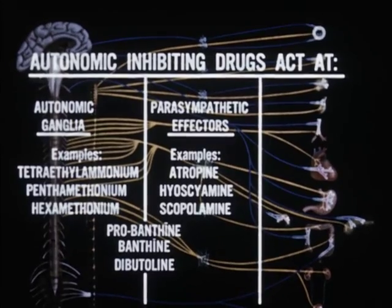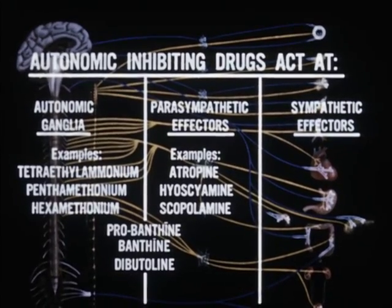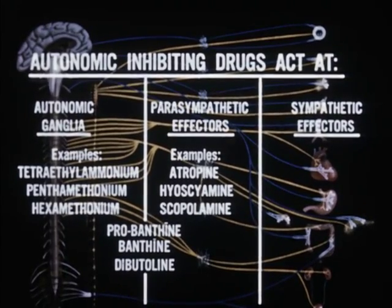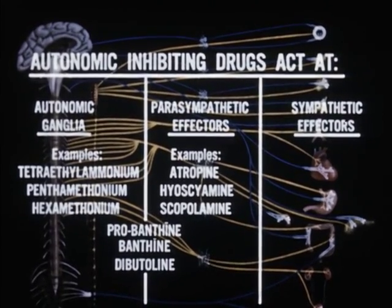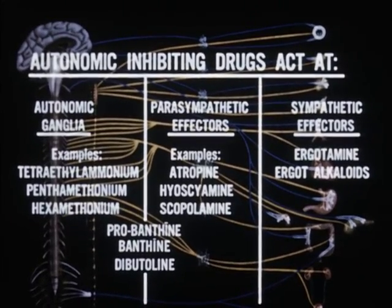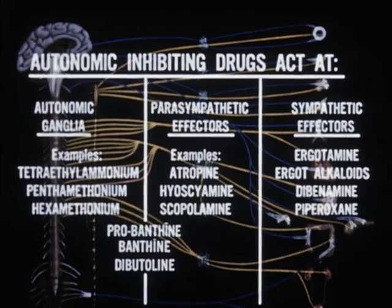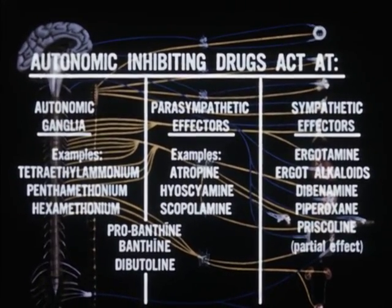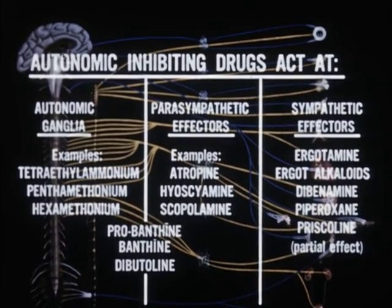Drugs which block at the effectors of the sympathetic subdivision are a special case, in that no drug known at the present time blocks all adrenergic functions. Ergotamine, the hydrogenated ergot alkaloids, dibenamine, piperoxane, and priscoline will block the blood pressure-raising effect of epinephrine, but not the tachycardia which epinephrine causes.